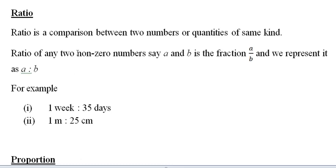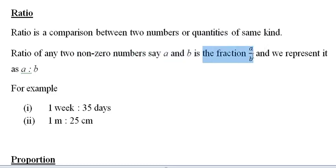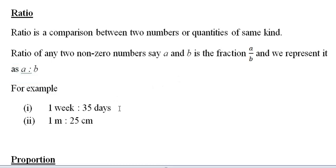If there is any ratio of non-zero numbers — let's say a is to b, or x and y, or p and q — it is actually a fraction. We can express it as a fraction: a is to b equals a by b. So we can express any ratio as a fraction.